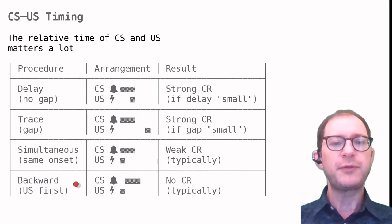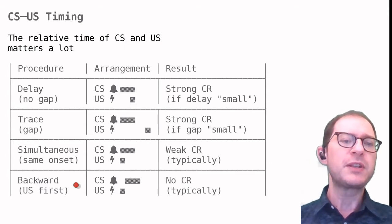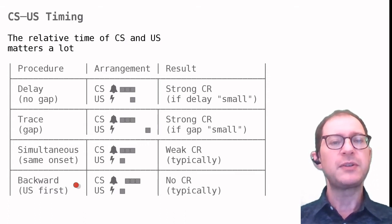The third and fourth row of the table shows simultaneous and backward conditioning. These procedures are typically not very effective, that is, they produce a weak CR or no CR at all. At the end of the lesson, we will ask what these findings mean.